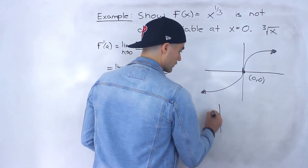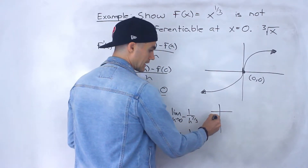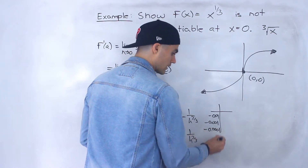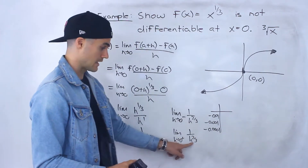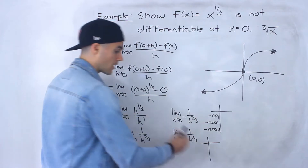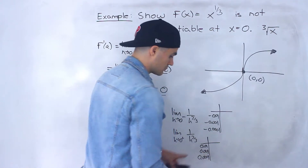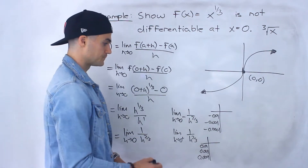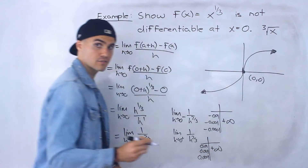For the negative-side table, plug in h values like −0.01, −0.001, −0.0001 — getting closer and closer to 0 from the negative side. Then make a table with h values approaching 0 from the positive side: 0.01, 0.001, 0.0001. When you plug these values into the function, what you're going to find is that both sides actually approach positive infinity.